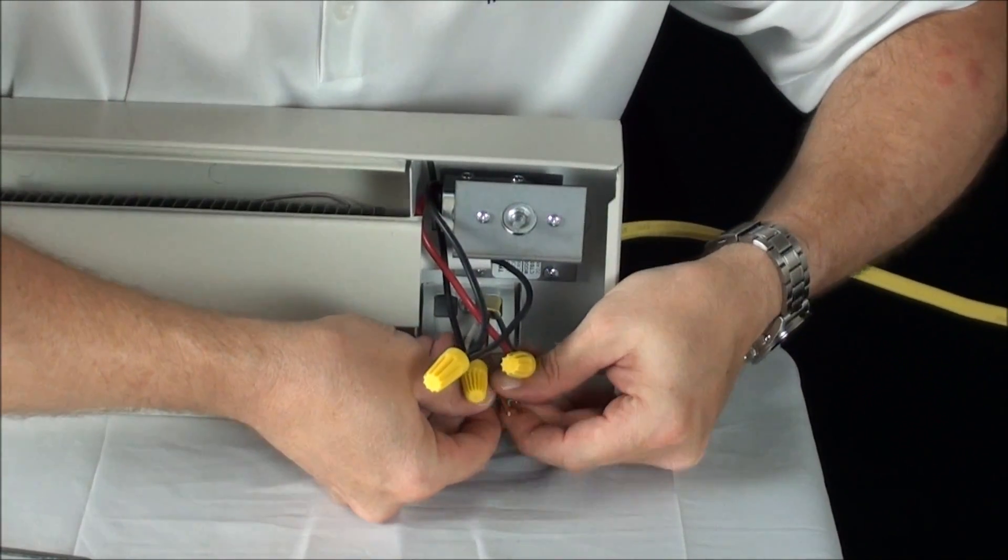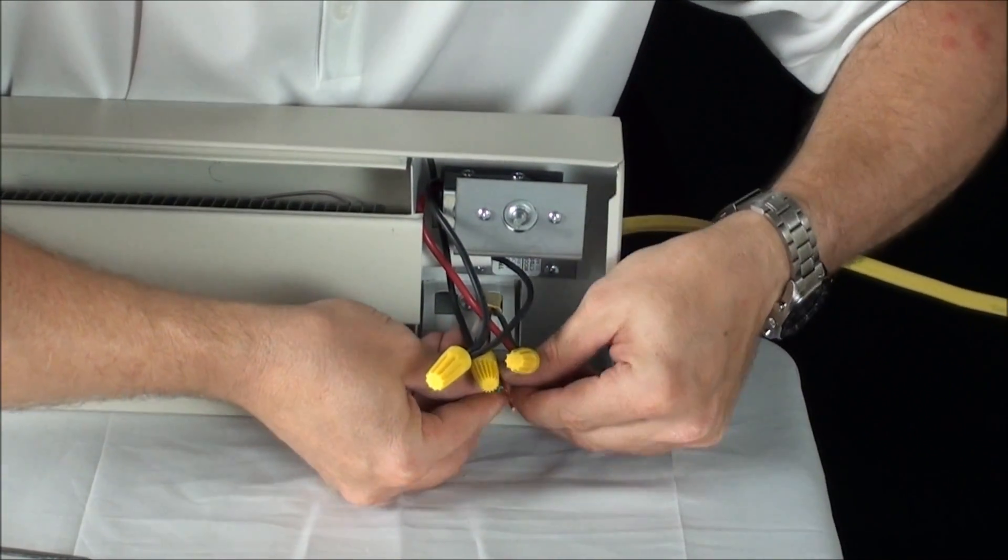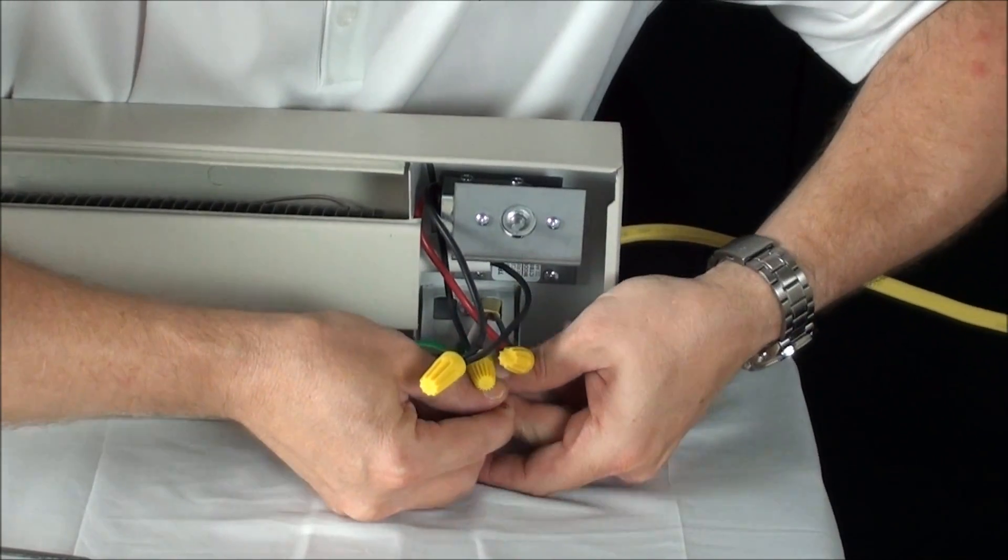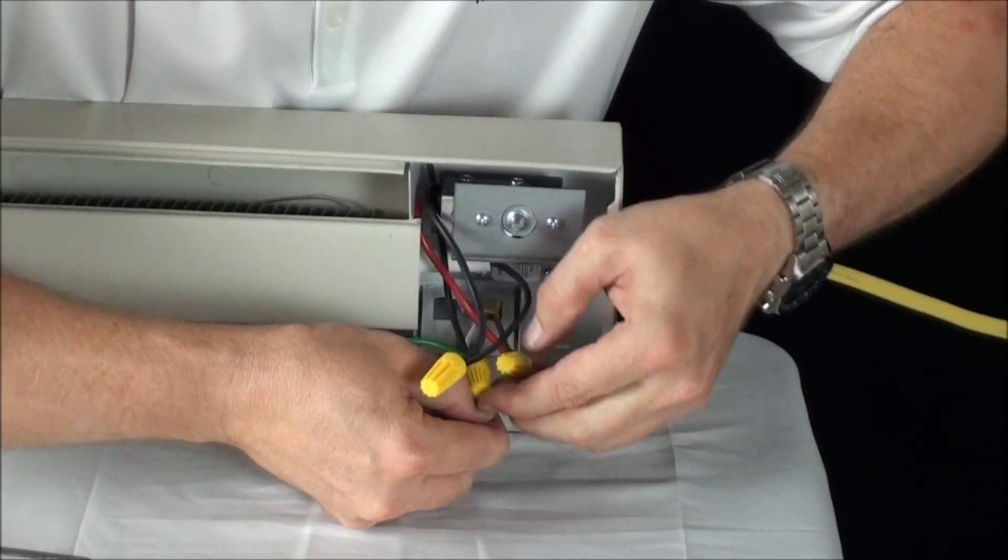Last, hook the ground wires together—the one from the power source and the one attached to the baseboard.